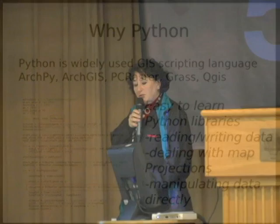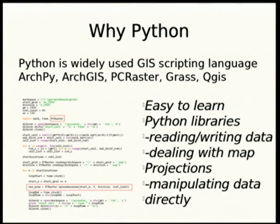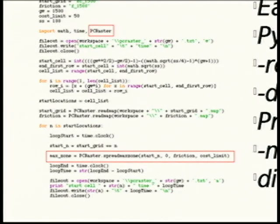So why have we chosen Python? I'm probably not saying anything that all of you already know, but there are a lot of great libraries out there, so it's fairly easy to get this code up and running. There are Python libraries that do reading and writing of this data. It deals with map projections and manipulating the data directly within a Python code base. The GIS community has been using Python for a lot of years, and there are well-established groups out there.